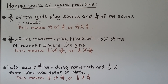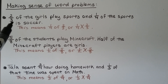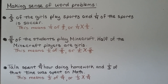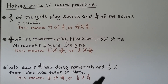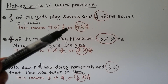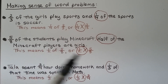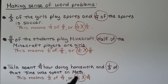Let's make sense of word problems because you'll have to write them as equations. We have 2 thirds of the girls play sports and 1 fourth of the sports is soccer. Here we have 5 eighths of the students play Minecraft, and half of the Minecraft players are girls — that means we need to find half of 5 eighths, or 1 half times 5 eighths. Tala spent 3 fourths of an hour doing homework and 1 third of that time was spent on math — we need 1 third of 3 fourths, that's 1 third times 3 fourths. Notice that in each of these, we have a fraction followed by the word "of" — 1 fourth of means 1 fourth times, half of means half times, 1 third of means 1 third times.